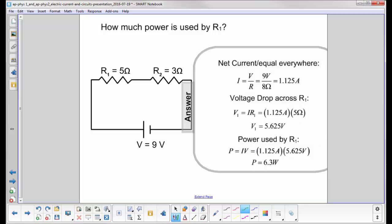The power is now IV, which is 1.125A times 5.625V. And we get 6.3W. Was there an easier way to do this problem?